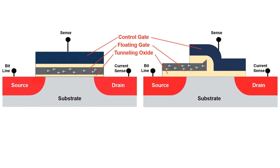After a fixed amount of time — check your targeted data sheet for that time, because it can vary based on what the IC maker is targeting for applications — we will have enough trapped electrons that we can turn off the high voltage.